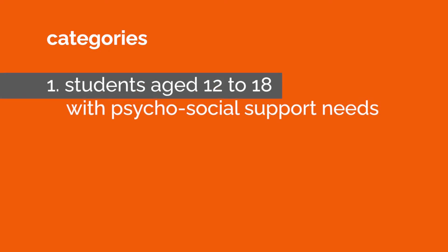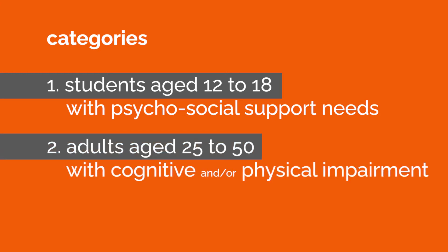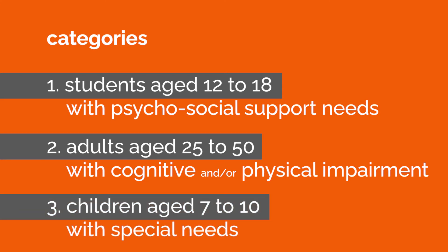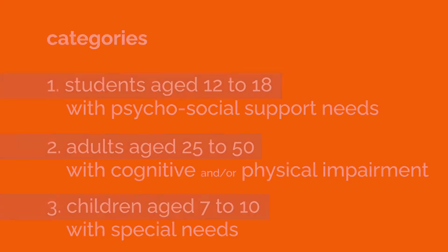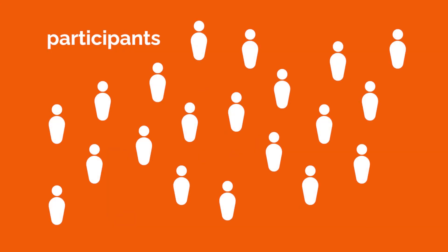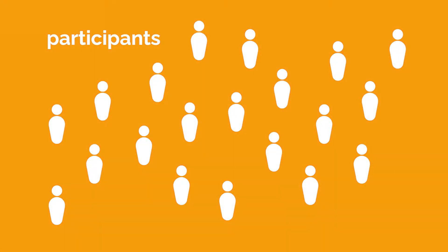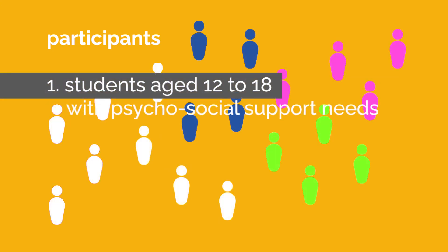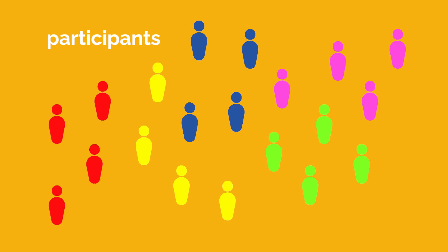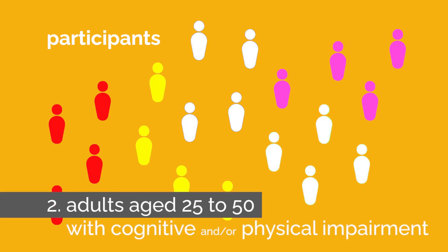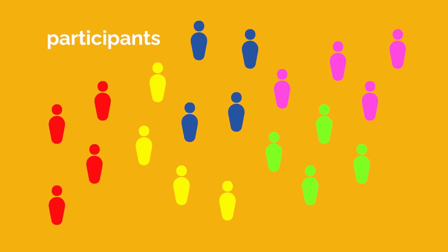Participants belonged to three categories. First, young students aged 12 to 18, with psychosocial support needs. Second, adults aged 25 to 50, with cognitive and/or physical impairment. Third, children with special needs, in particular due to dyslexia, dyspraxia, and dyscalculia, aged 7 to 10. Workshops were attended by 20 participants — 12 males and 8 females — forming five teams: two teams for the first category, two teams for the second category, and one team for the third category.